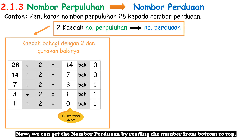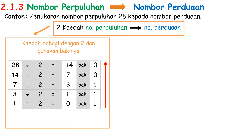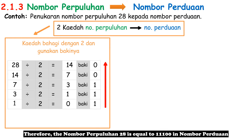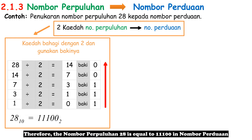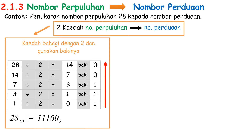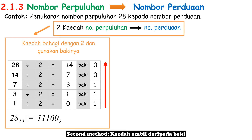Now we can get the Nombor Perduaan by reading the remainders from bottom to top. Therefore, Nombor Perpuluhan 28 is equal to 11100 in Nombor Perduaan.